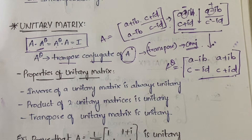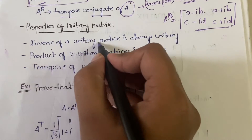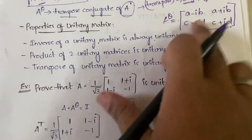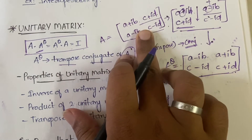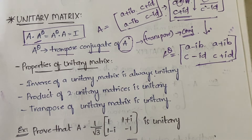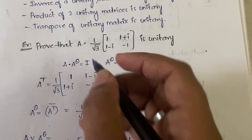Now let's look at the properties of a unitary matrix. First, the inverse of a unitary matrix is always unitary. Second, the product of two unitary matrices is also unitary. Third, the transpose of a unitary matrix is always unitary. These are the three key properties: inverse, product, and transpose.